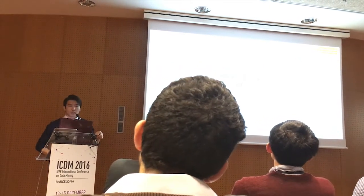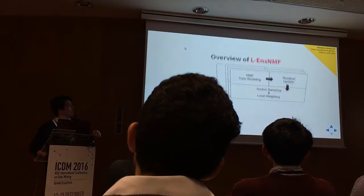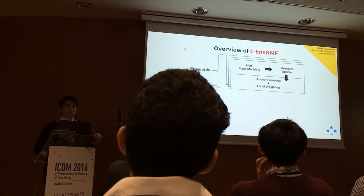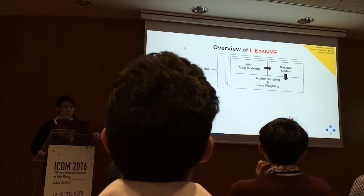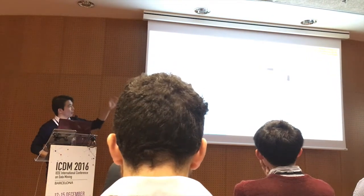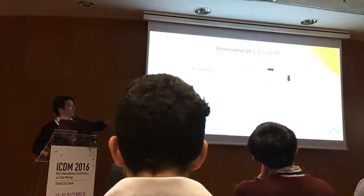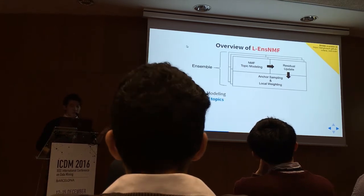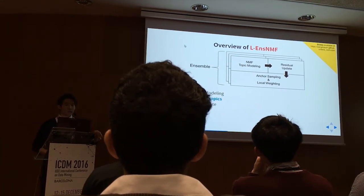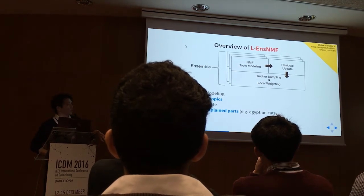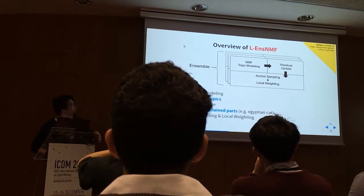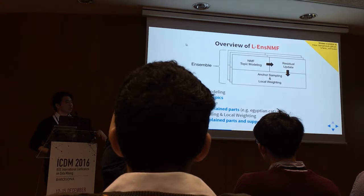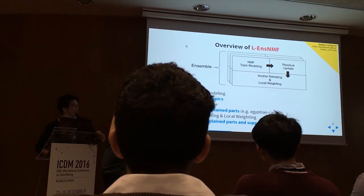Now let's look at the details of the approach. This is the overview of LensNMF. It may consist of one or multiple stages, and at each stage it conducts NMF topic modeling, residual update, and a combination of anchor sampling and local weighting. On a higher level, NMF topic modeling is done to find a set of topics, residual update to identify unexplained parts — for example, the Egyptian cat — and the combination of anchor sampling and local weighting to reveal unexplained parts and suppress explained parts and general information.